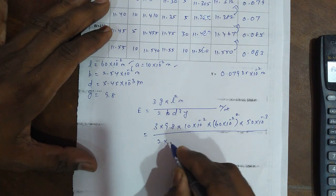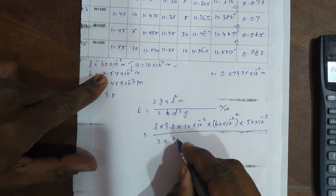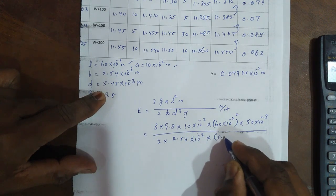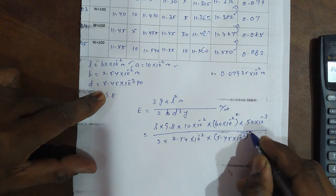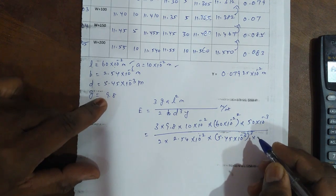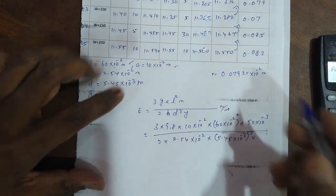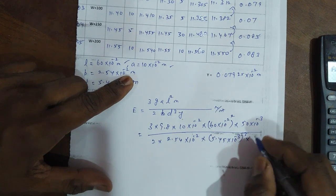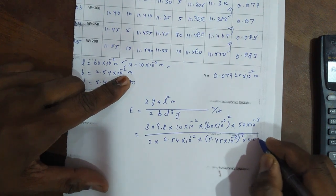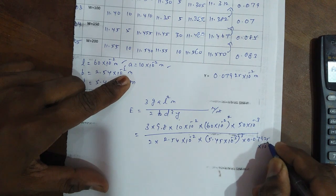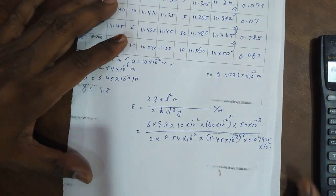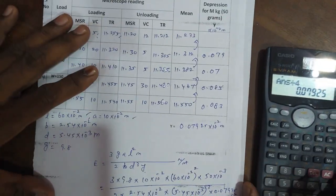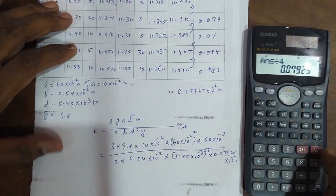Then divide by 2 into B, breadth of the bar, 2.54 into 10 to the power minus 2, into D value, 5.45 into 10 to the power minus 3 whole cube, into Y. Y means from the mean values, 0.07925 into 10 to the power minus 2 meters. Next, this value, the calculations to find Young's modulus of the beam.